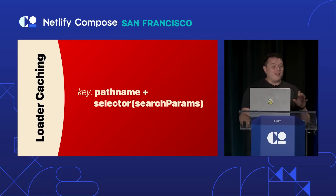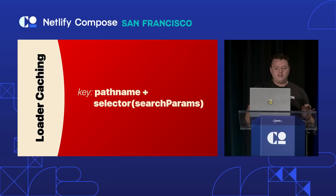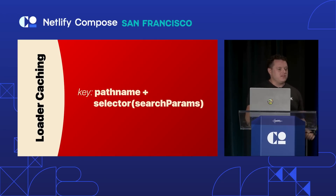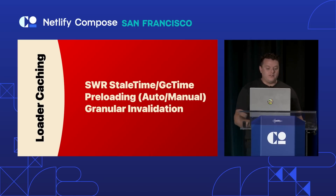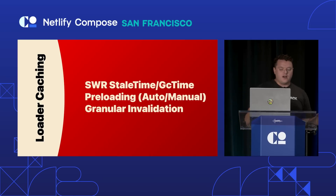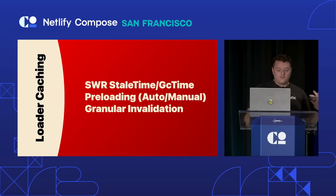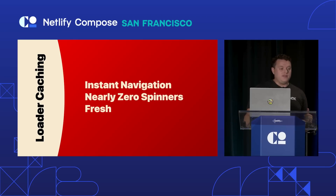At about 5% of the size of TanStack Query, the router's built-in caching is keyed on a combination of pathname, selected search parameters, and other custom things if you want — just like a React Query key. This tiny addition to the router can now handle stale-while-revalidate sequences, automatic preloading, and even granular invalidation, which is missing from a lot of modern frameworks. For your users, that means instant navigations, very few spinners, and potentially less bandwidth.